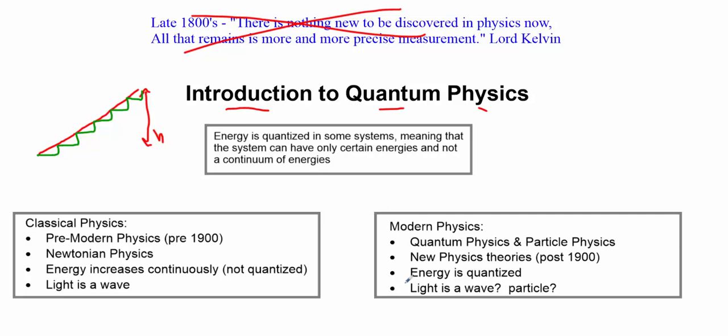Modern physics starts to change some stuff. This is where we start getting into the quantum and particle physics realm. Particle physics will come into play in several videos later. We're talking about the standard model. That's not going to come into play right now. This is more or less about quantum physics. And really we're talking about most of the new physics theories that took place post-1900. And the two that I'm going to isolate right now is they define energy as something that's quantized. And that is light a wave? Is light a particle? What is light? And modern physics tries to explain that.